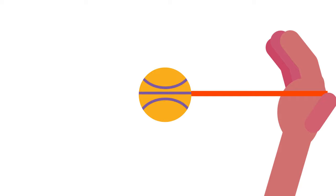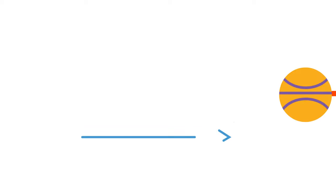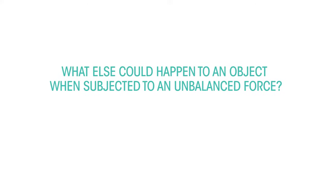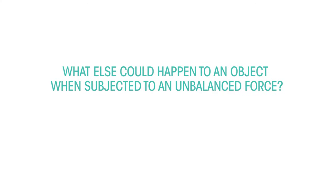This is just like the ball thrown upwards, except that it's the force from the piece of elastic that slows the ball and then brings it back. What else could happen to an object when subjected to an unbalanced force?